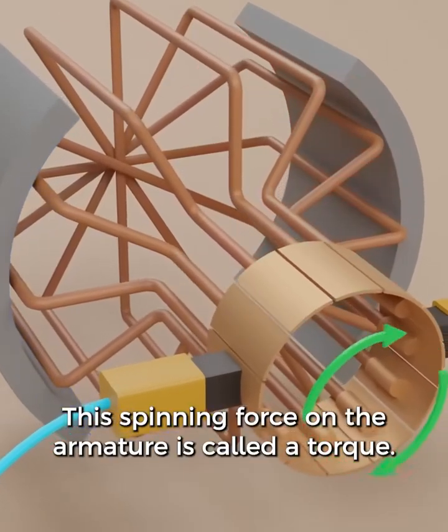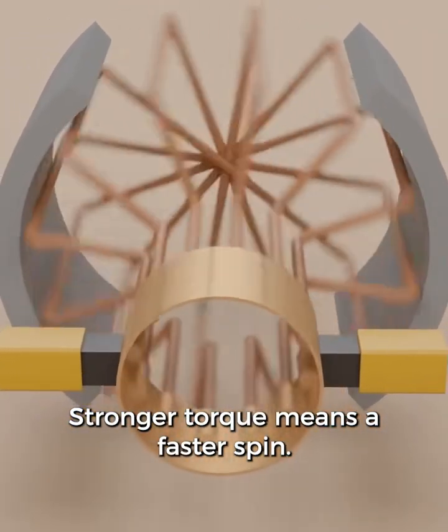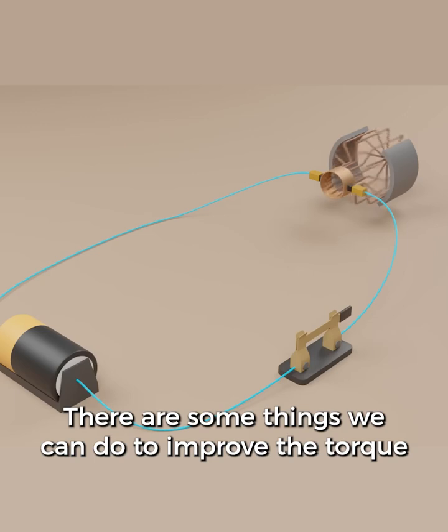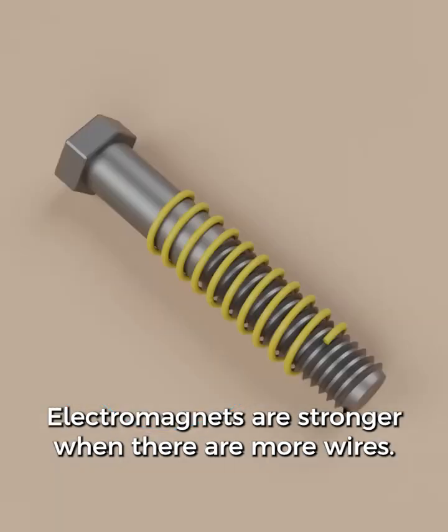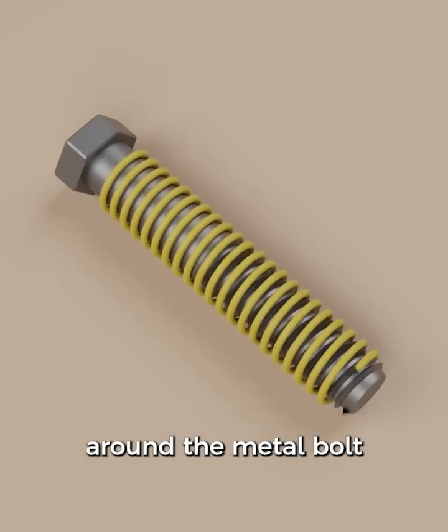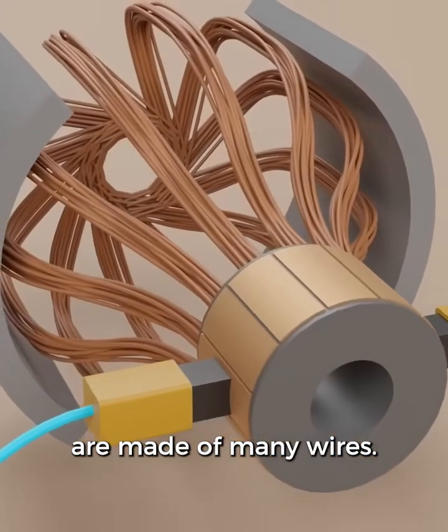This spinning force on the armature is called a torque. Stronger torque means a faster spin. There are some things we can do to improve the torque of the motor. Electromagnets are stronger when there are more wires. This is true when we wrap more wires around the metal bolt, and it's also true when each of our armature loops are made of many wires.